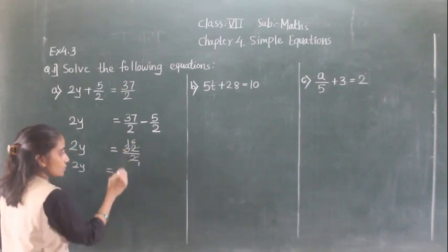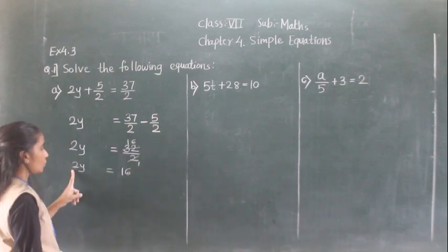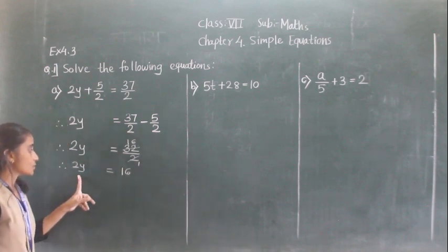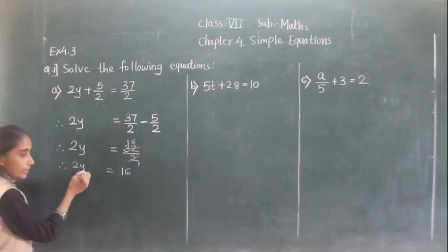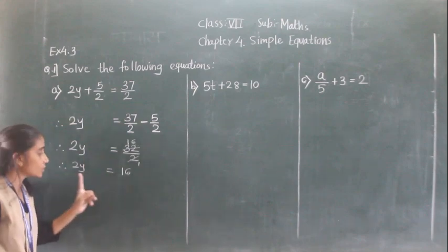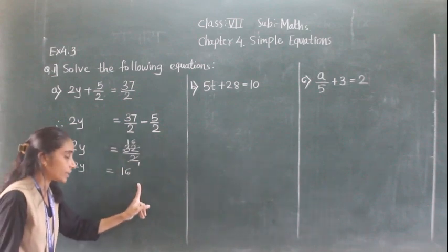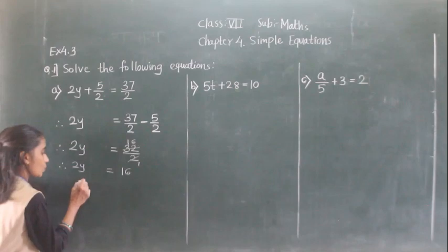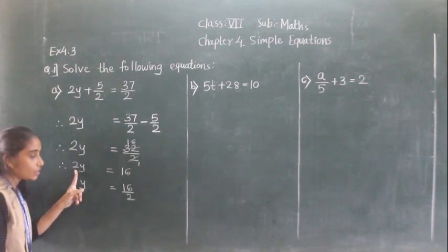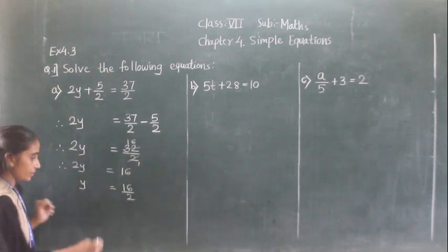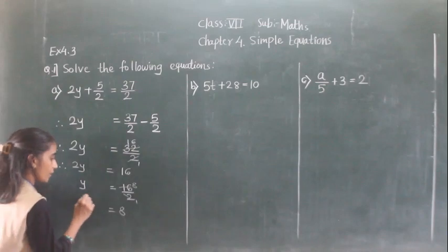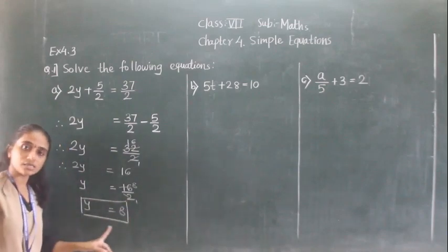Now 2y = 16. We need to separate the variable. 2 is multiplied with y, so we transfer 2 to the right-hand side where it becomes division. So y = 16 divided by 2, which gives y = 8.